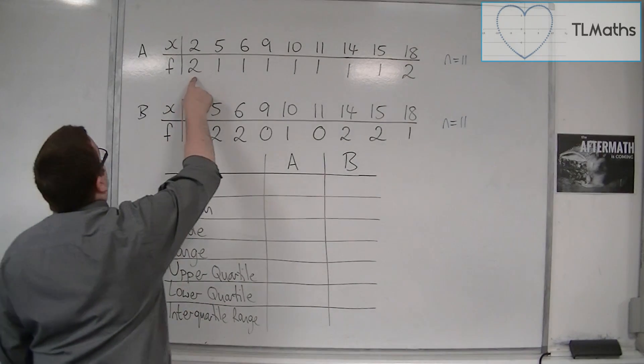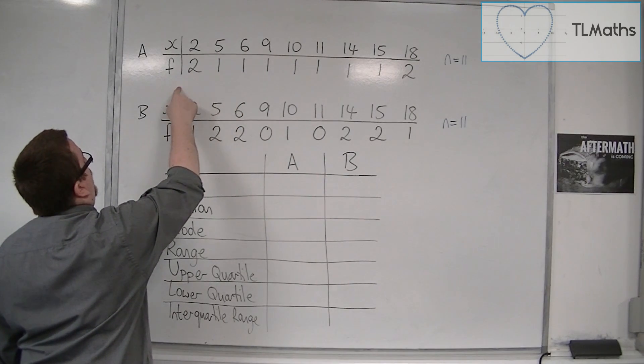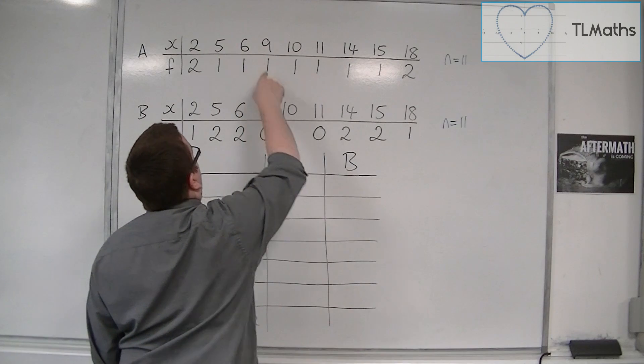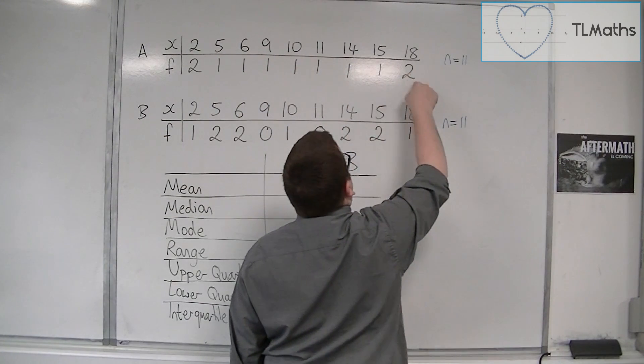So that means there are two twos. So if this was the raw data, I would have 2, 2, 5, 6, 9, 10, 11, 14, 15, 18, 18.